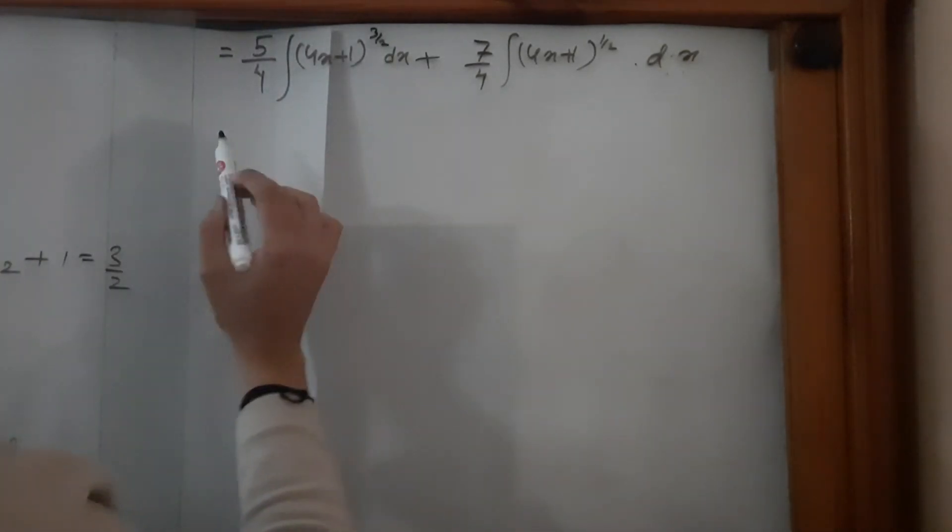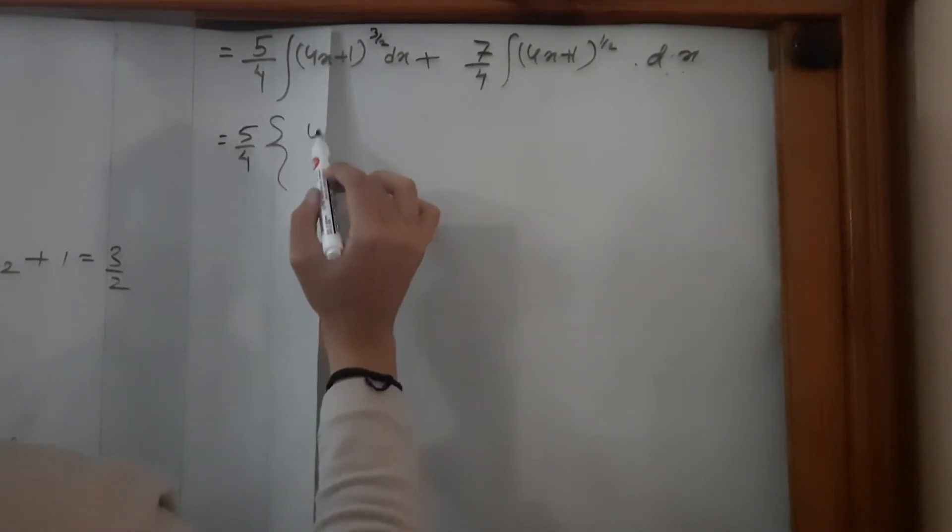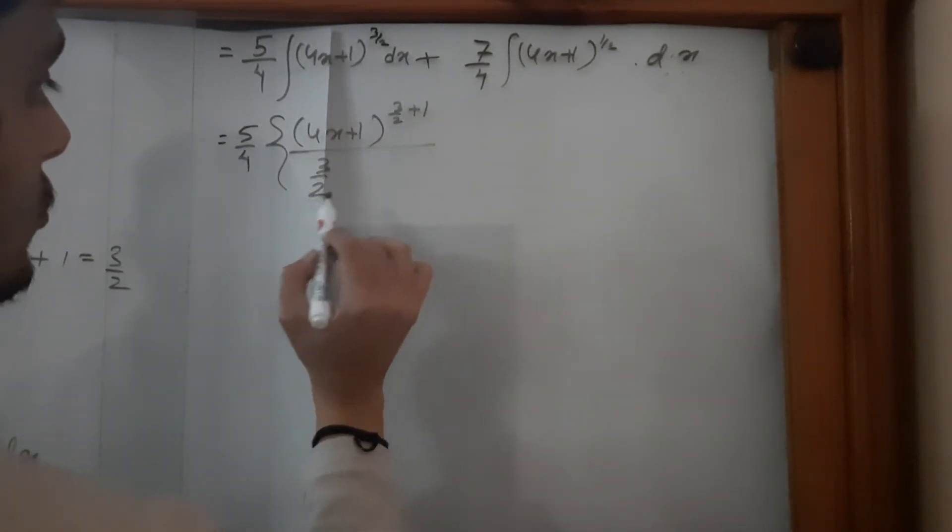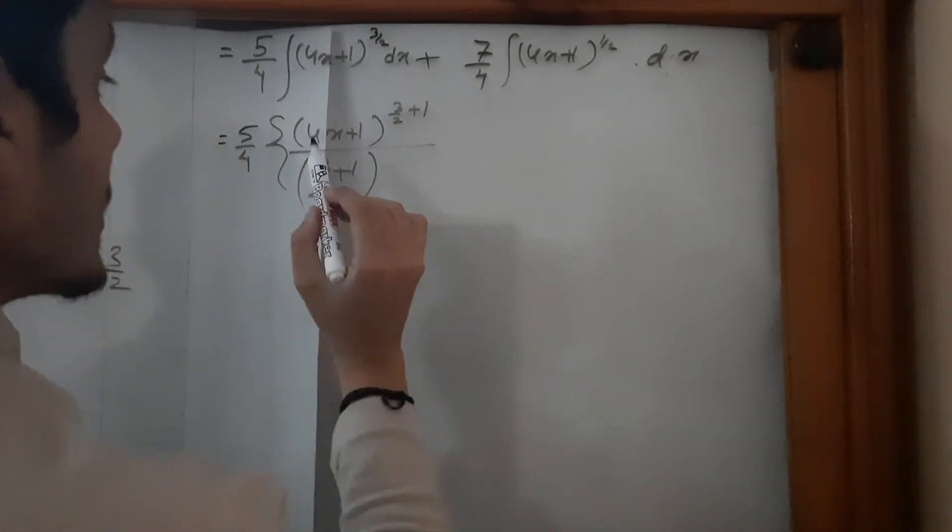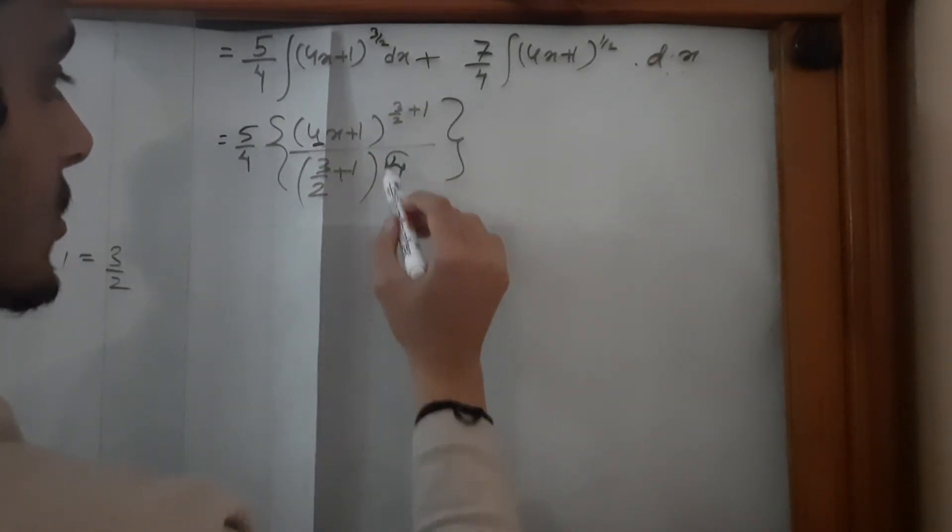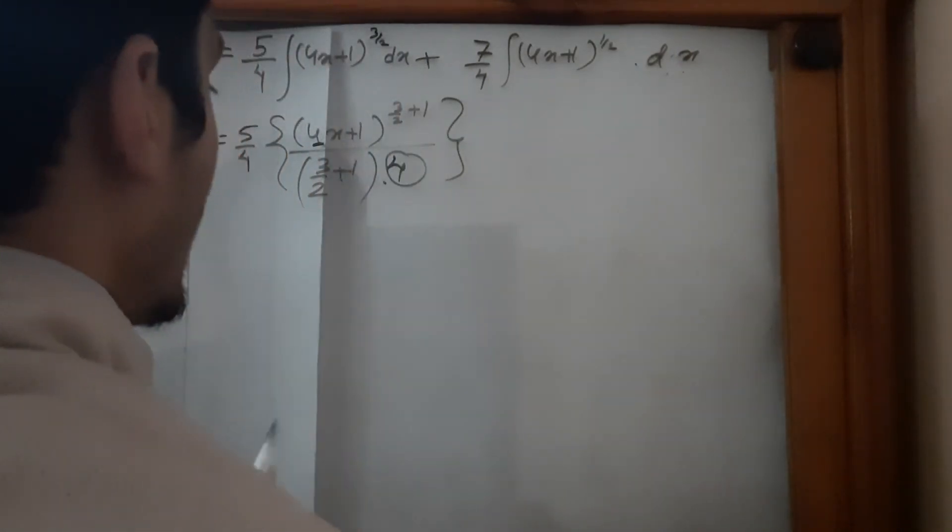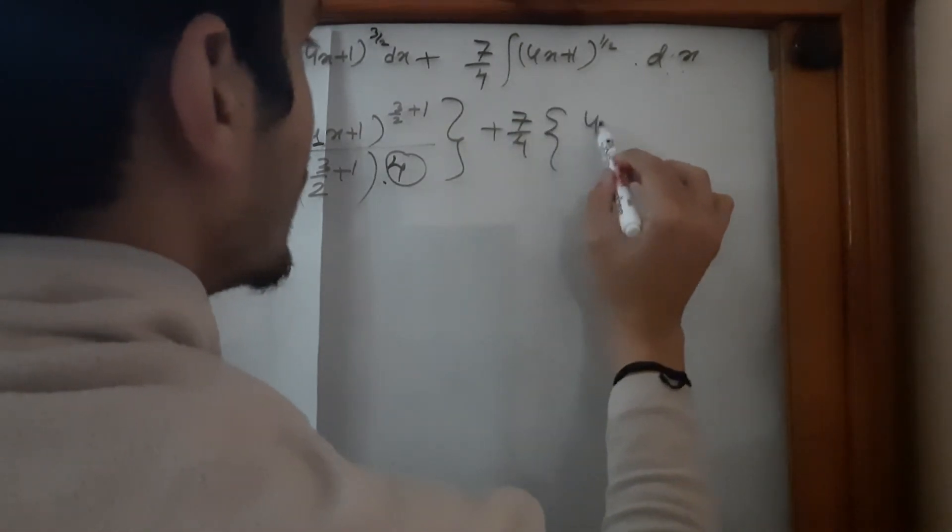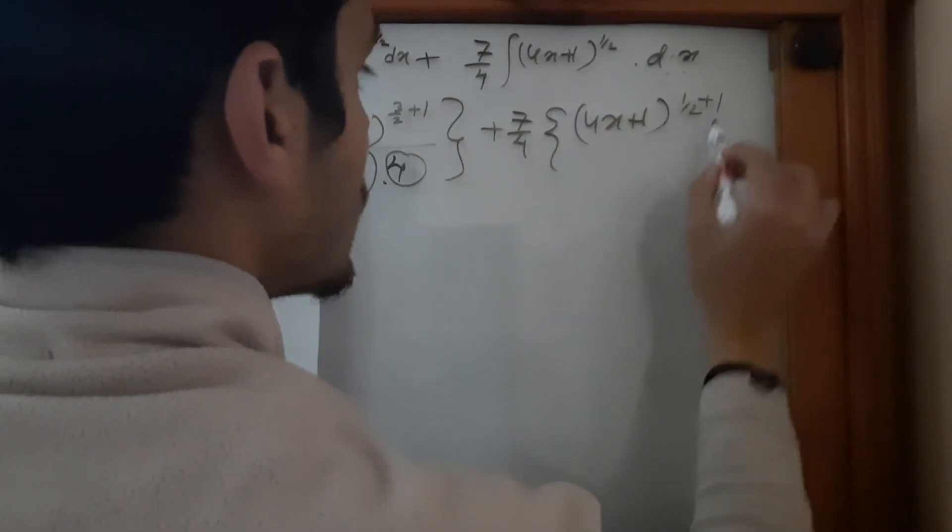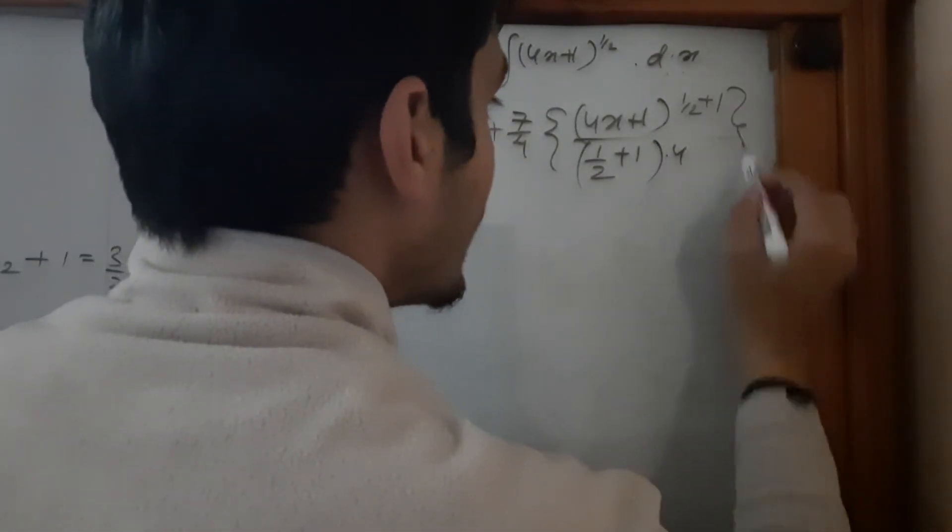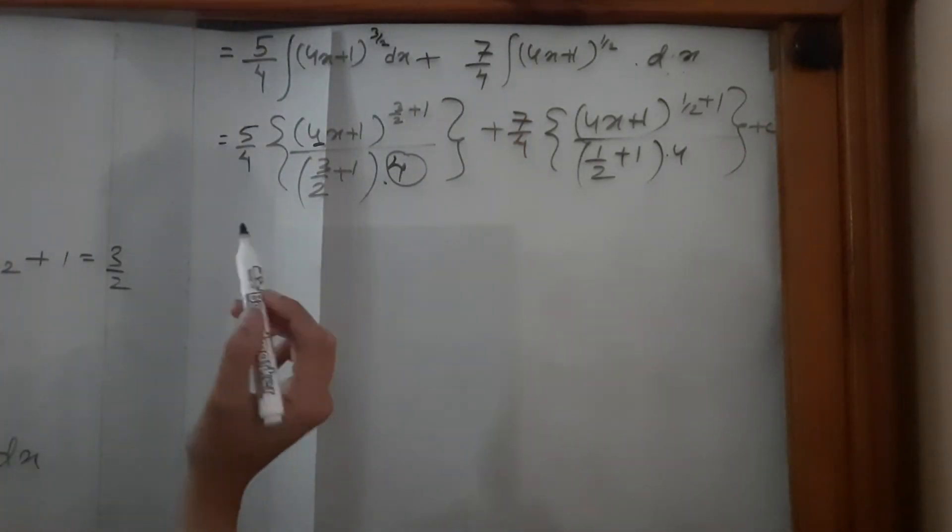Let's do simple integration now. 5/4 times (4x + 1)^(3/2 + 1) divided by (3/2 + 1). And also this 4 divides this numerator. This could be missed sometimes, so please remember this. Remember to add this. Plus 7/4 times (4x + 1)^(1/2 + 1) divided by (1/2 + 1) times 4 again, plus the integration constant. Now it's about simple mathematical process.